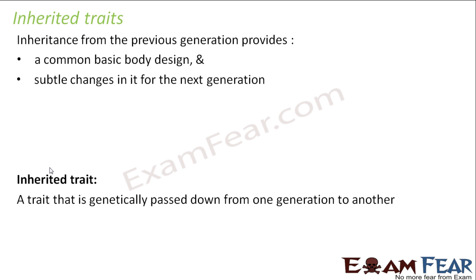What is an inherited trait? It is a trait that is genetically passed down from one generation to another. Certain characteristics are passed from parents to offspring through the genes — so the transfer takes place through genes. Let us look at some examples which define inherited traits and give us more idea about what inherited traits are.